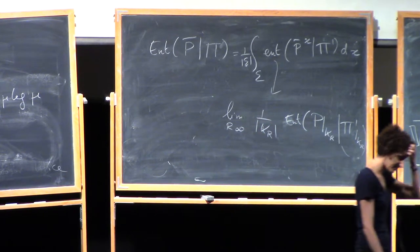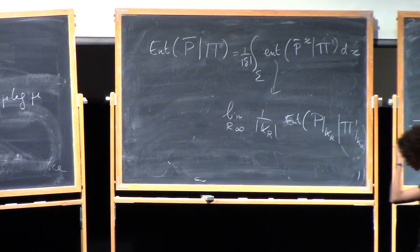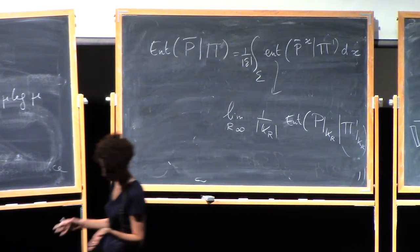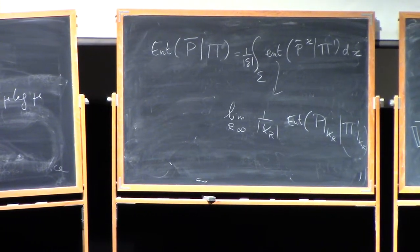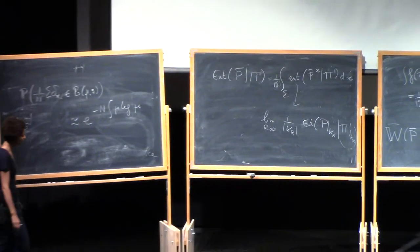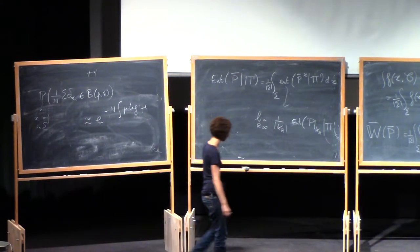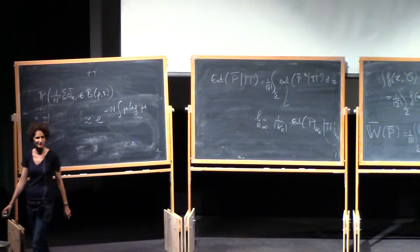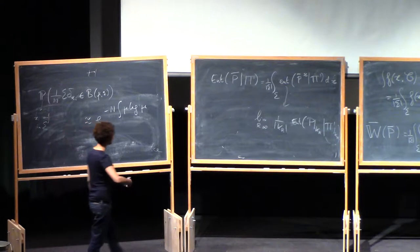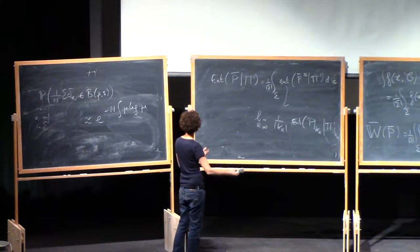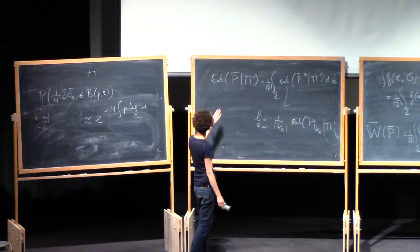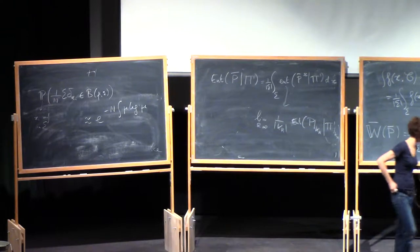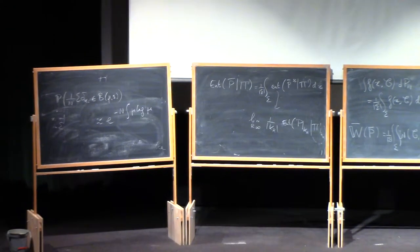The Poisson point process, by the way, is the point process that you get when you throw your points at random without interaction — roughly. It's the point process we would get if we didn't have the interaction terms that make the particles repel. A relative entropy always measures, in some sense, a distance. The relative entropy with respect to something measures how close you are to that thing. So here you are measuring how close your point processes are to the Poisson point process of suitable intensity.